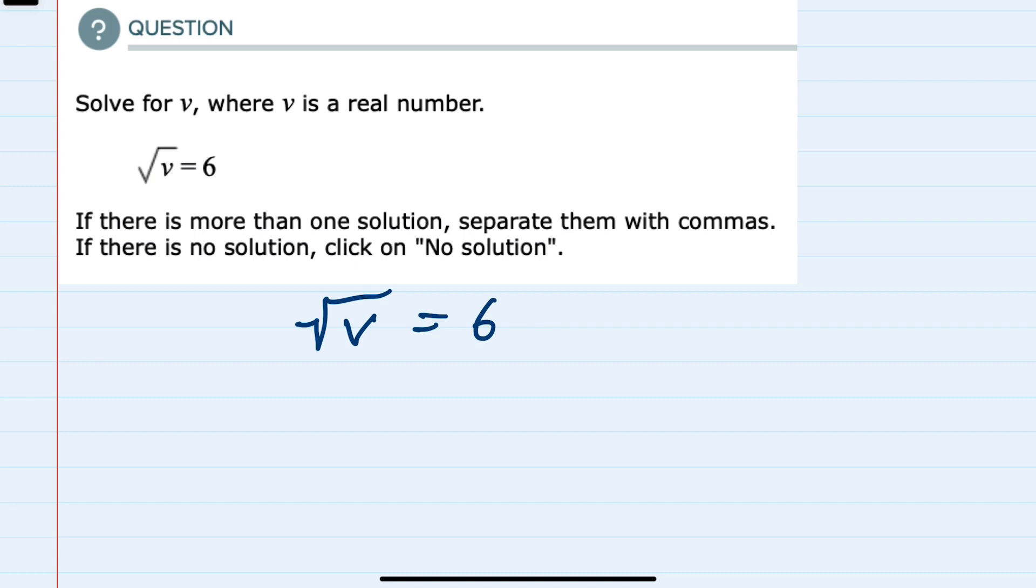So to get rid of the square root symbol, I can do that by squaring both sides of the equation. If it were a cubed root, I could have cubed both sides of the equation. But since it's a square root,